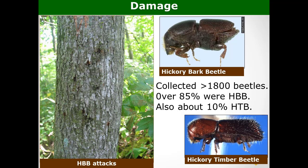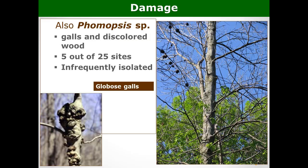The shagbark was doing fairly well — these things can affect shagbark, but it was more a problem with the bitternut. They collected over 1,800 beetles and over 85% were hickory bark beetle. As for disease agents, Phomopsis galls were found on 5 of 25 sites — they're very striking and usually found on only a few trees. They're out there, but they aren't what's causing the death of the hickory at a landscape level.